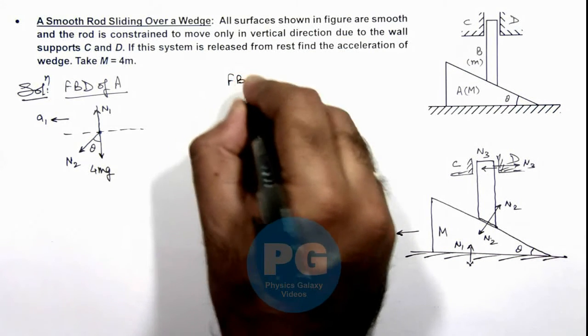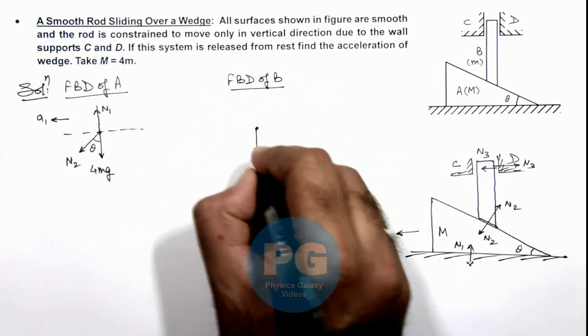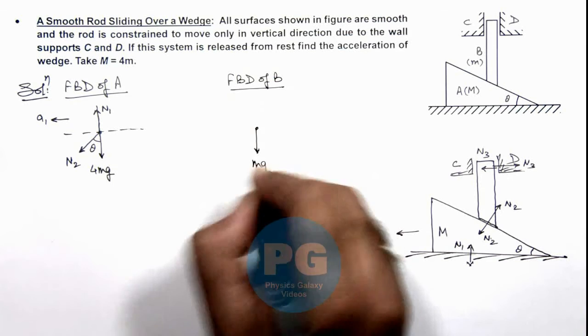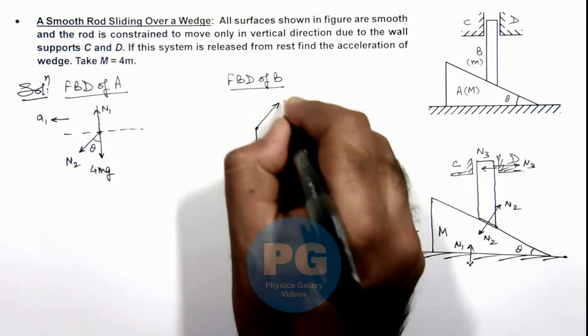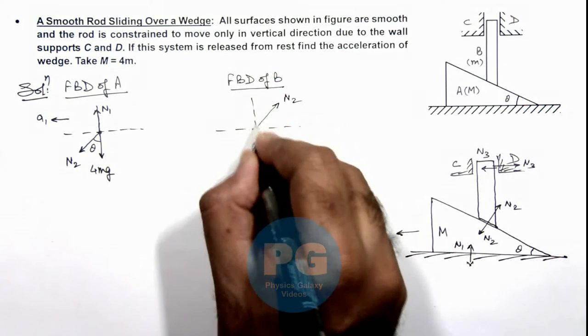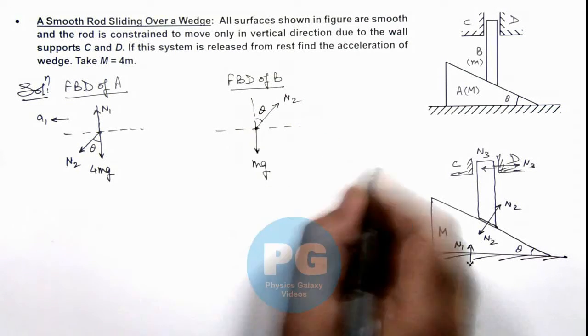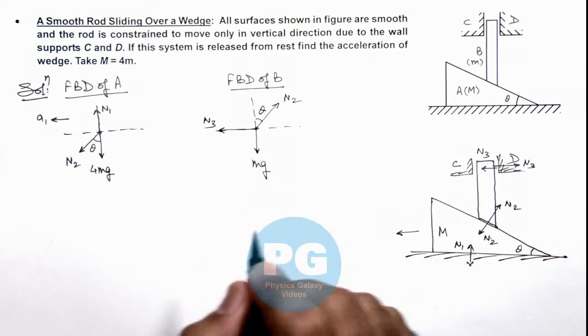Now if we draw the free body diagram of rod B, then here we can see downward its weight is acting, and one normal reaction due to the inclined plane N2 is acting on it, which is at an angle theta with the vertical, and a normal reaction N3 due to the support D.